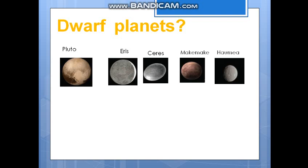If you are not remembering these dwarf planet names, you can mix them with your friends' names — like Pluto, Eris, Ceres, Makemake, and Haumea paired with your friends' names. But don't go too far with it, because your friends will be angry!